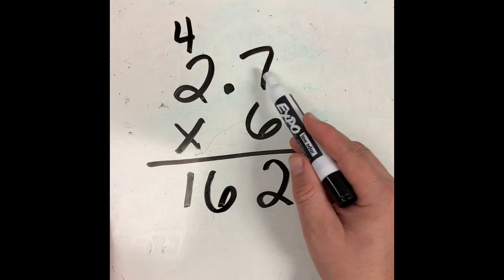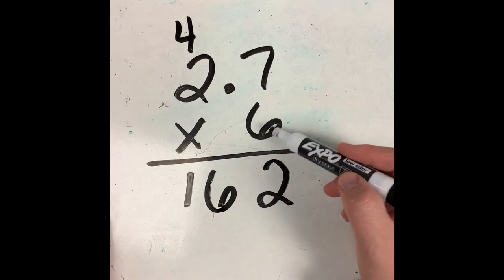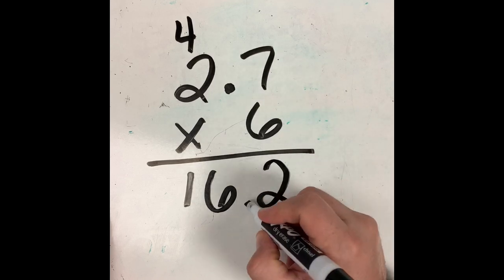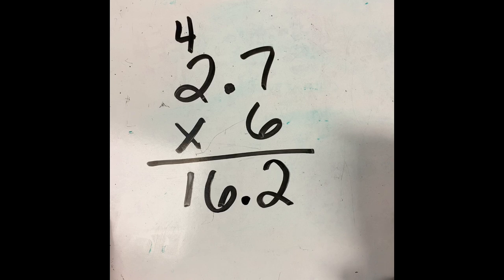And, since I only have one digit behind the decimal point, or to the right of the decimal point, in my question, there's nothing with my 6, just one digit in the tenth spot over here, I'm going to leave just one digit to the right of my decimal point at the bottom. So, it would be 16.2.